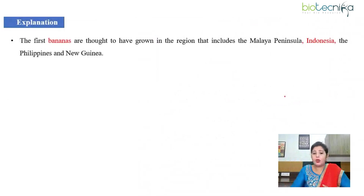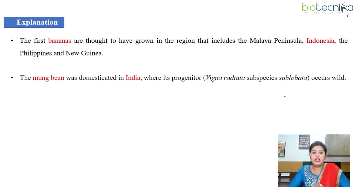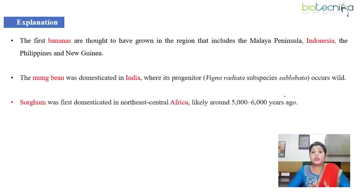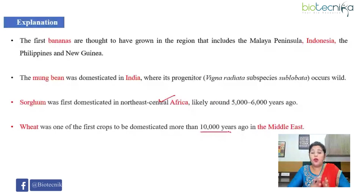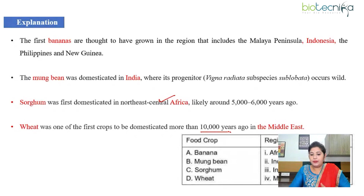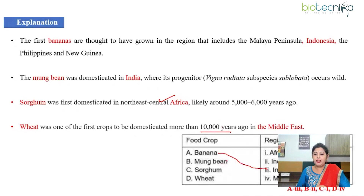When we talk about banana, they are thought to have originated in Peninsular Malaya, Indonesia, and the Philippines. Since Indonesia is given in the table, we can match banana with Indonesia. Mung bean was domesticated in India. Sorghum was first domesticated in Northeast Central Africa around 5,000 to 6,000 years ago. Wheat is one of the first crops to be domesticated, more than 10,000 years ago in the Middle East — not India, as many may assume. So the correct combination is: banana–Indonesia, mung bean–India, sorghum–Africa, wheat–Middle East.